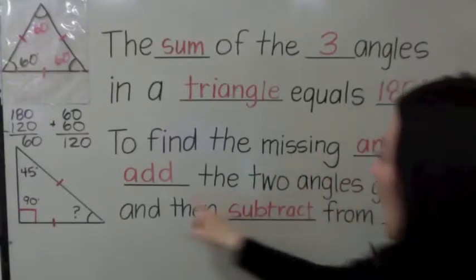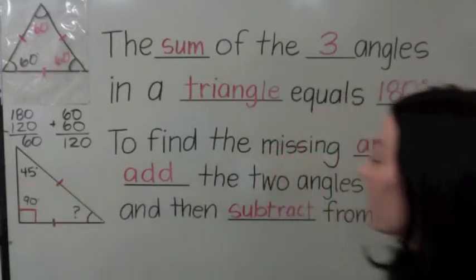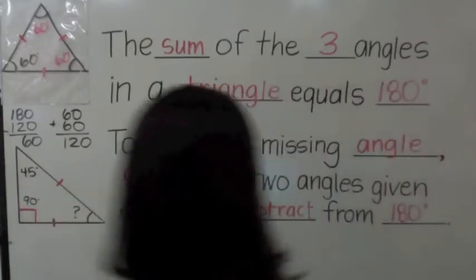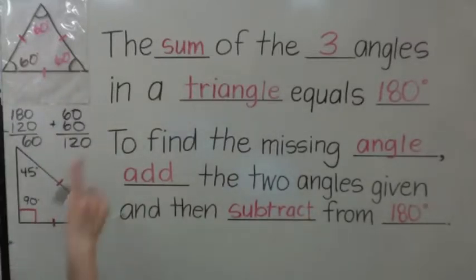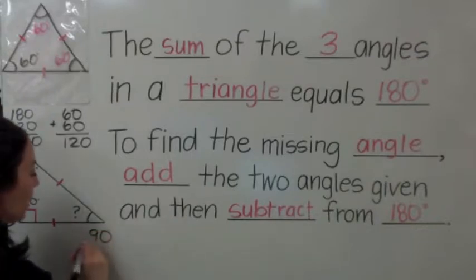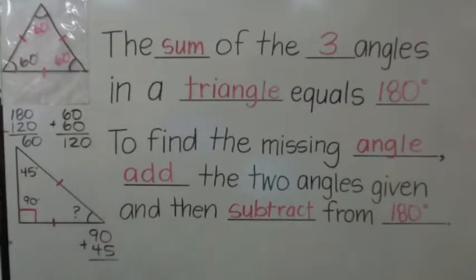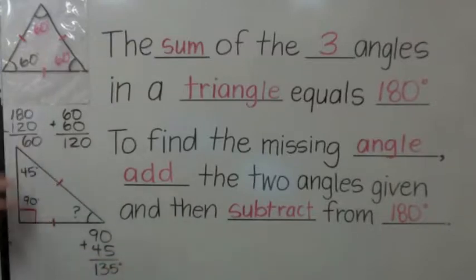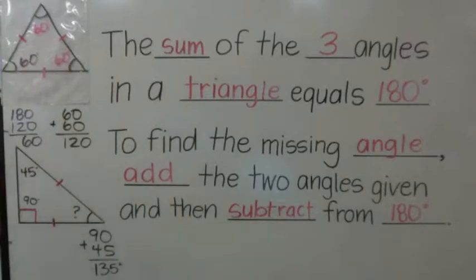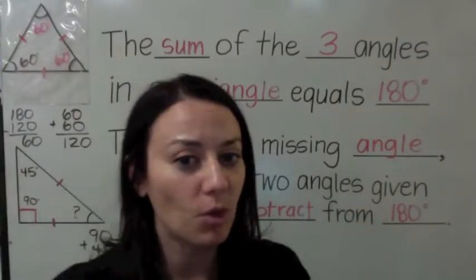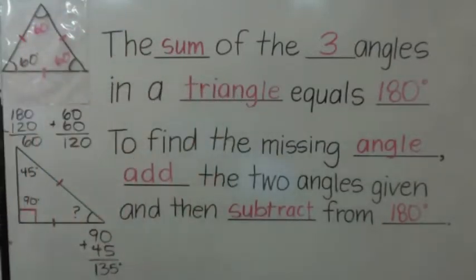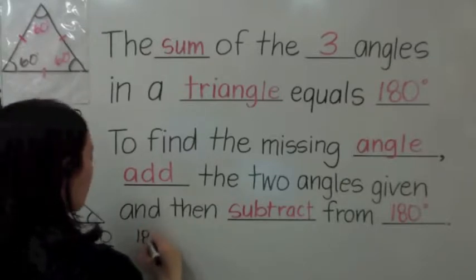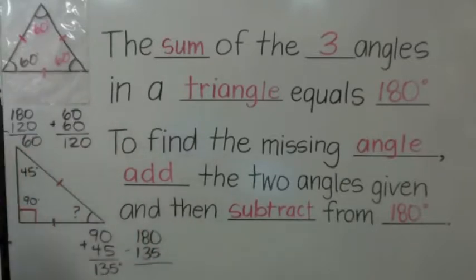To find the missing angle, add the two angles given: 90 and 45. Then subtract from 180 — it's a two-step process. 90 plus 45 degrees is 135 degrees. Together, these two angles equal 135. Then we subtract from 180: 180 minus 135 is 45 degrees. So the missing angle is 45 degrees.